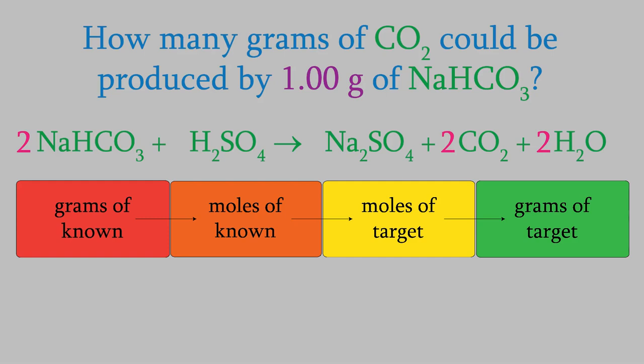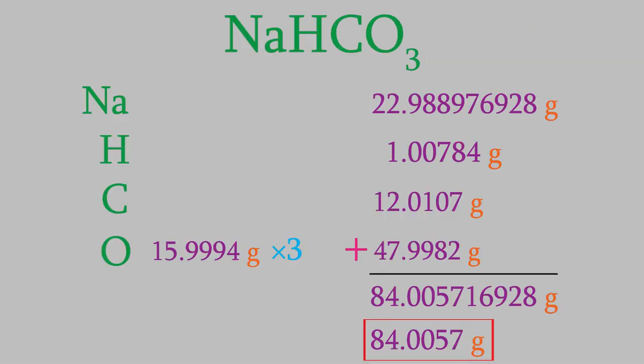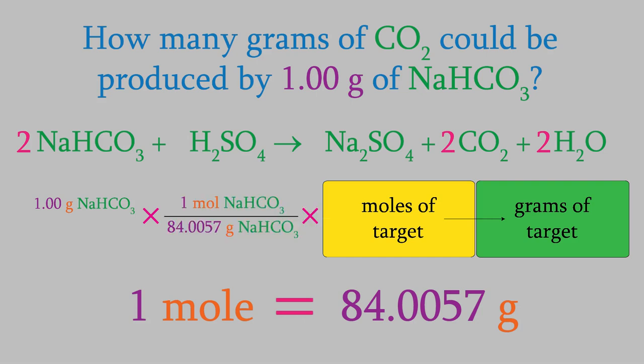So let's use this method on our problem. We start with the grams of the known compound — in our case, 1.00 grams of sodium bicarbonate. Next, we'll convert that into moles. We need to know how much 1 mole of sodium bicarbonate weighs, which we get by using the atomic masses on the periodic table. We find that 1 mole of sodium bicarbonate weighs 84.0057 grams. Remember, we're converting to moles, so we want the grams of sodium bicarbonate to cancel out. That means we'll put the grams in the denominator and the moles on top.